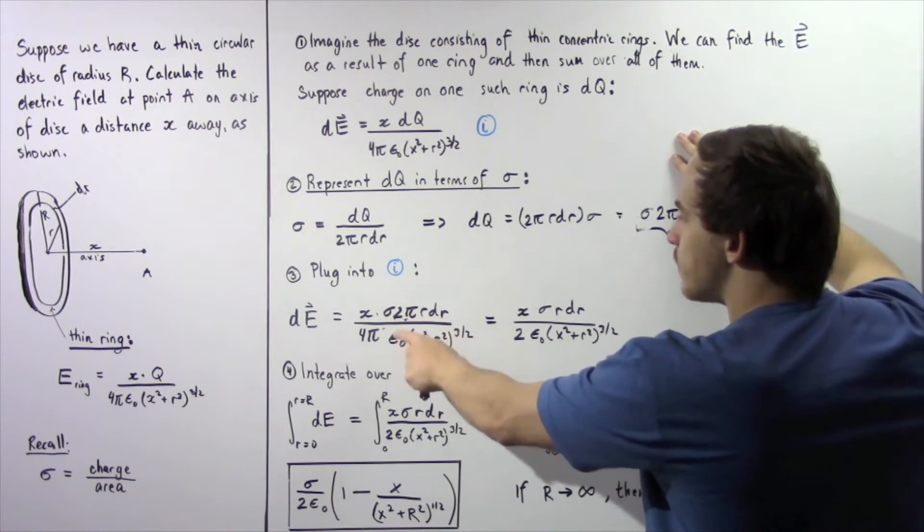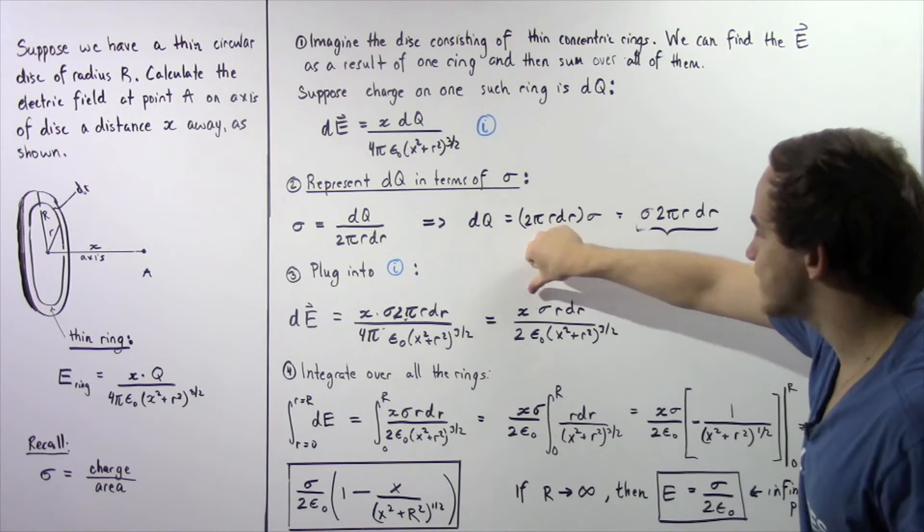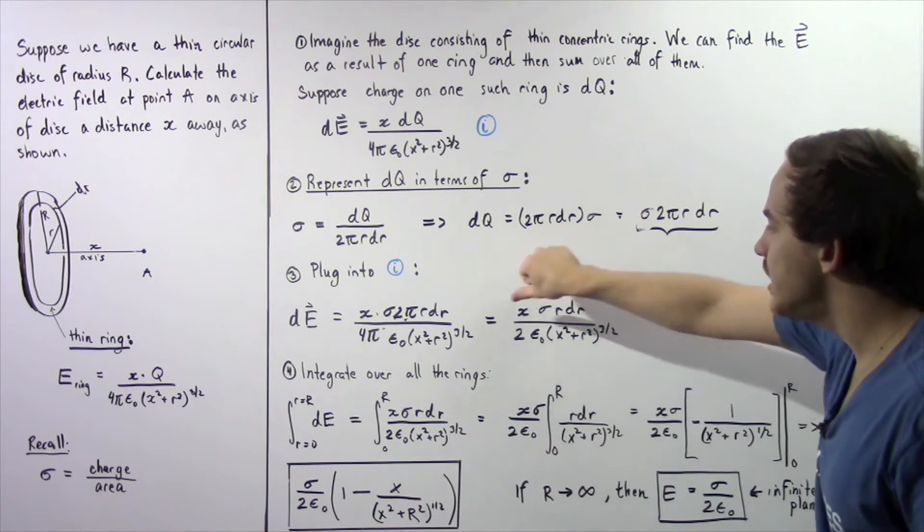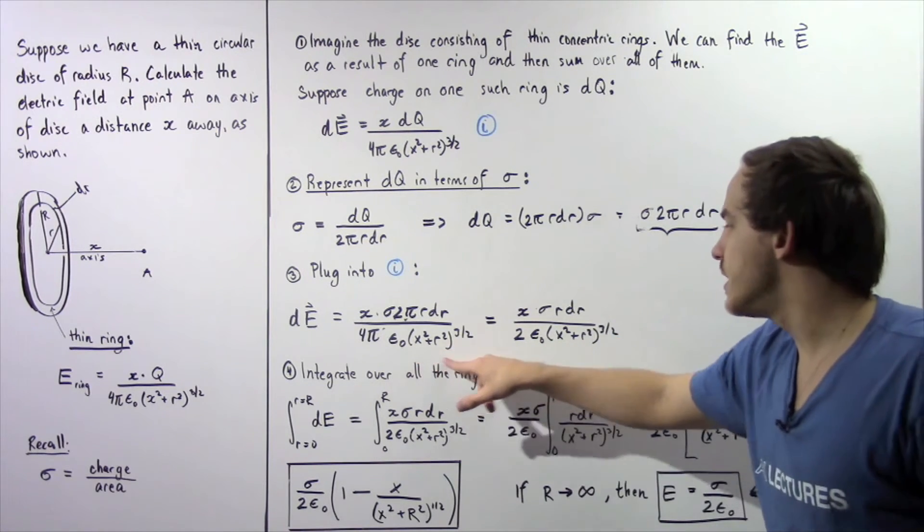So notice, we can cross a few things out. For example, we cross the pi's out, we cross this 2, and this becomes a 2. So we have x sigma r dr divided by 2 epsilon naught multiplied by this.